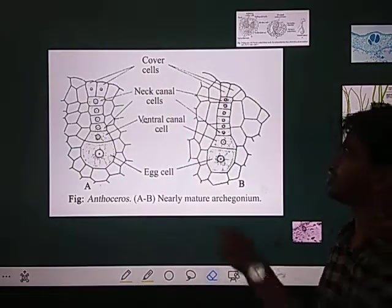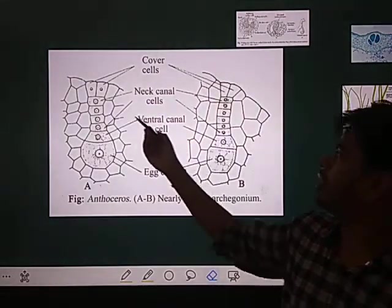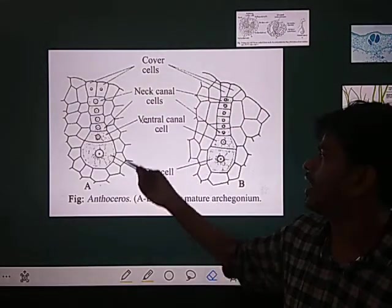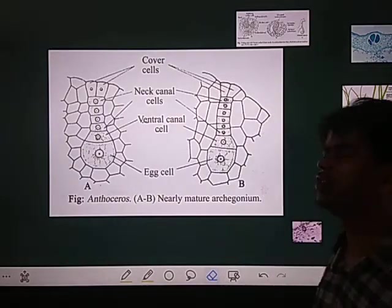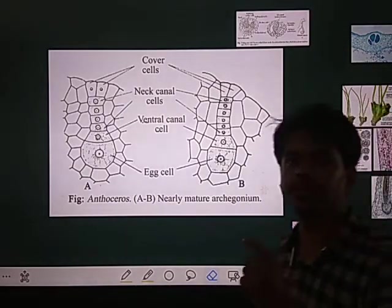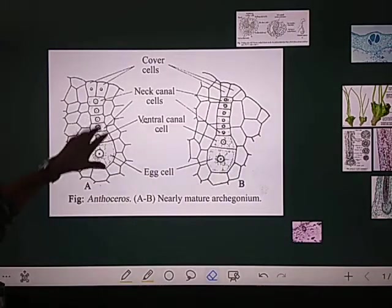You can see four to five neck canal cells. In the venter, there's a single venter canal cell and a large egg cell. That's all about the archegonium structure.